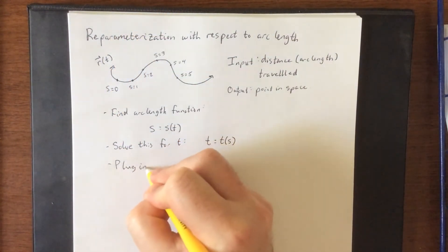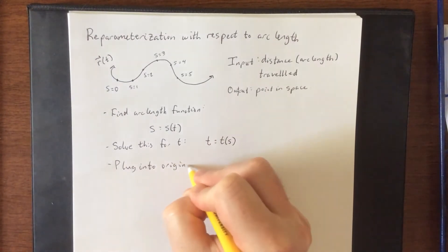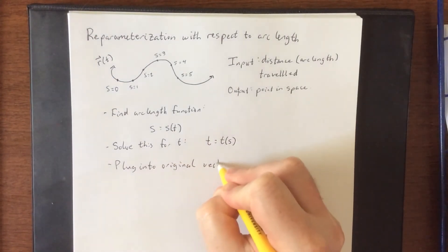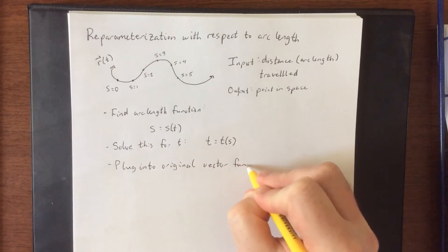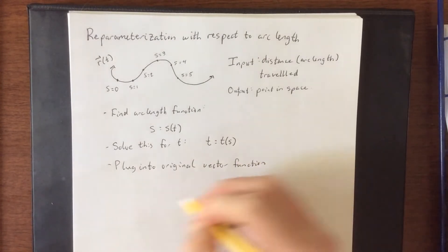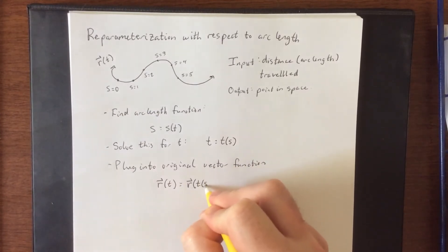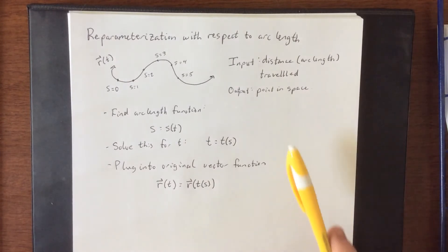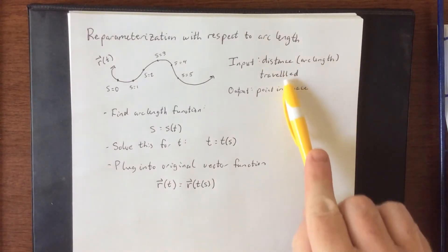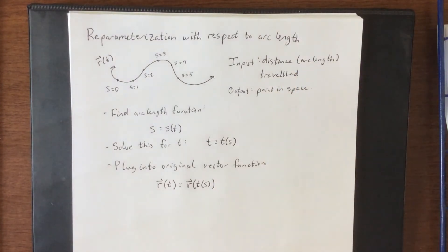So plug this into the original vector function. So r of t is going to become r of t of s. So final answer is going to be in terms of the distance traveled, that s variable that we had just a moment ago.